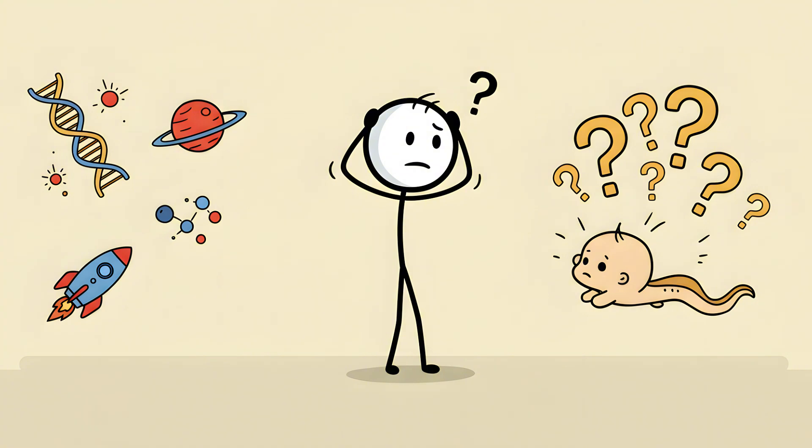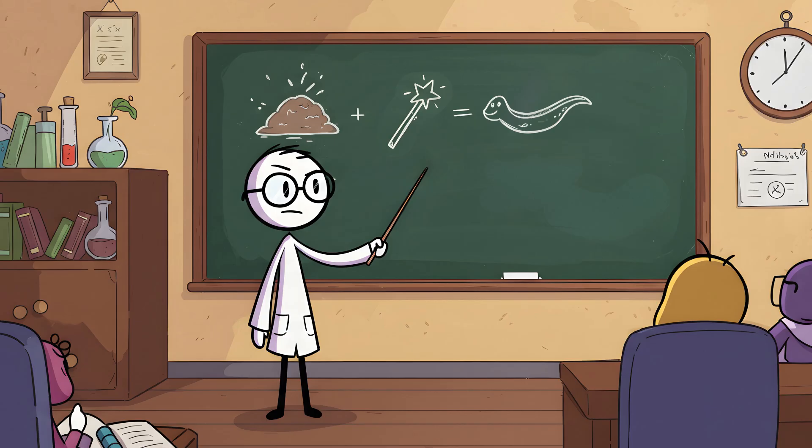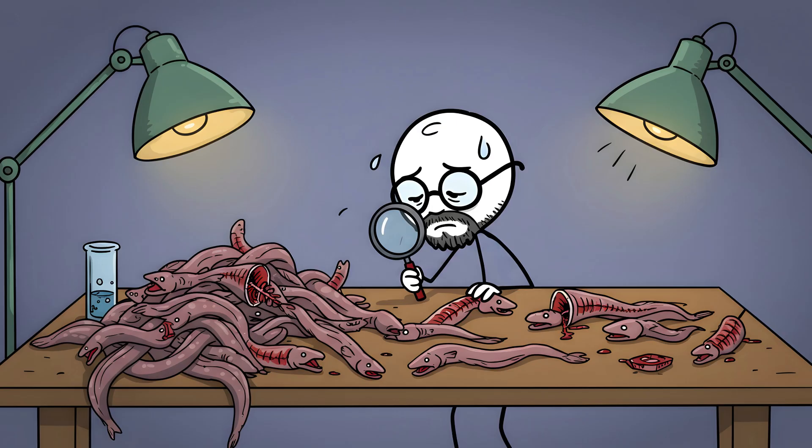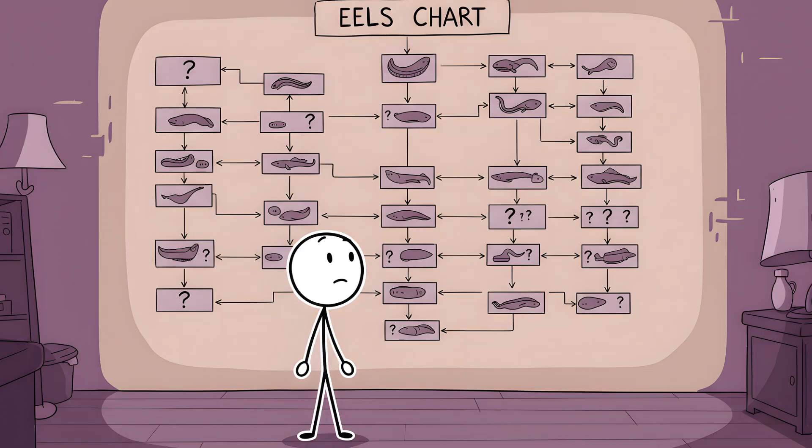The great philosopher Aristotle, after dissecting countless eels and finding zero reproductive organs, just threw his hands up and decided they spontaneously generated from mud. That was the leading scientific theory for a while. Eels are just magic mudworms. Even in the 20th century, a young Sigmund Freud spent a miserable month dissecting 400 eels, desperately trying to find their male sex organs. He failed. It almost drove him mad, which, given his later work, is really saying something.